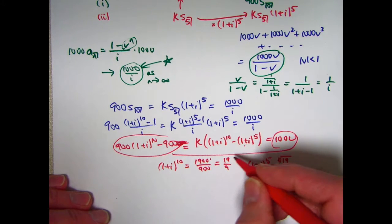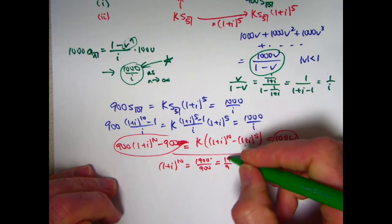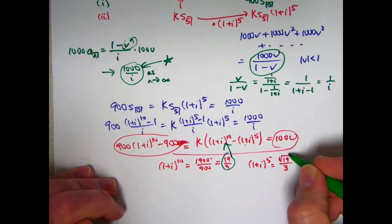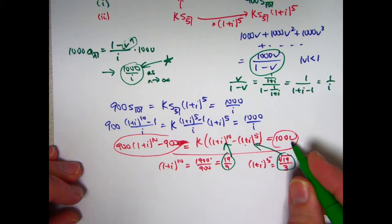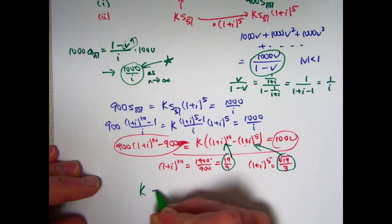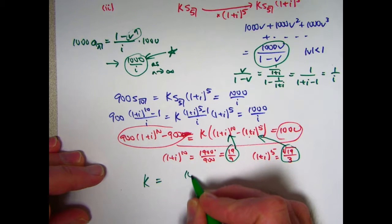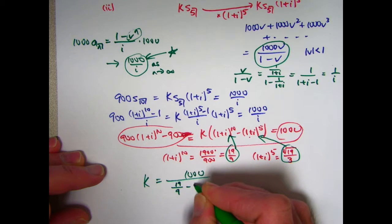I've got to solve for k. I can plug this into here and plug this into here, simplify, set it equal to 1000, divide to solve for k. Looks like k is going to be 1000 divided by 19 ninths minus square root of 19 over 3.